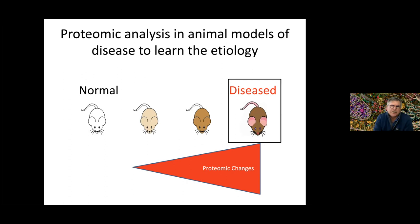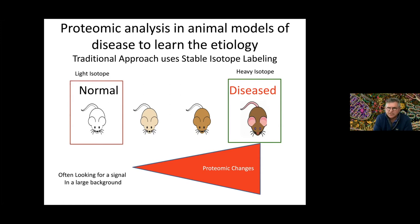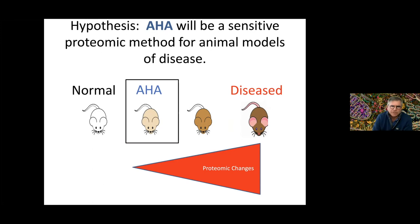The idea is that most proteome experiments use stable isotope top labeling and compare normal to disease — but oftentimes the disease state you're looking at is an end stage, quite progressed. What we really want to understand is the early changes associated with disease so that we can intervene at a much earlier time point. With stable isotope top labeling, we're often looking for a signal in a large background, so detecting those early changes can be rather difficult. The idea we were pursuing was: can we pulse-label at various points over the course of the disease and look for early changes that might be driving it?